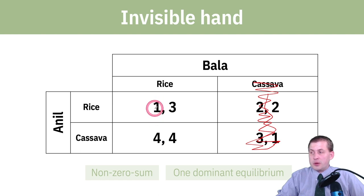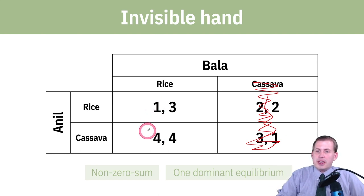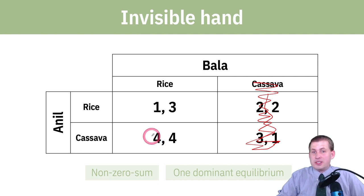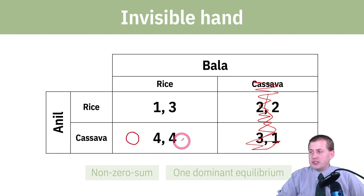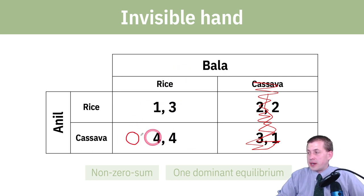Here you get one util if you grow rice, or four if you grow cassava. So your best choice if Bala grows rice is cassava, because that gets you four points. You draw a circle in that cell — so if Bala chooses rice, Anil's best choice is to grow cassava.